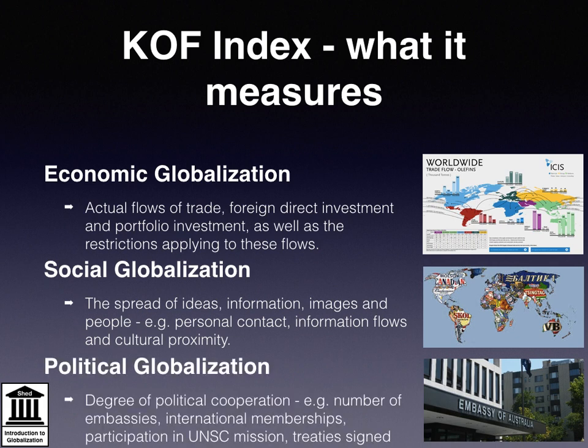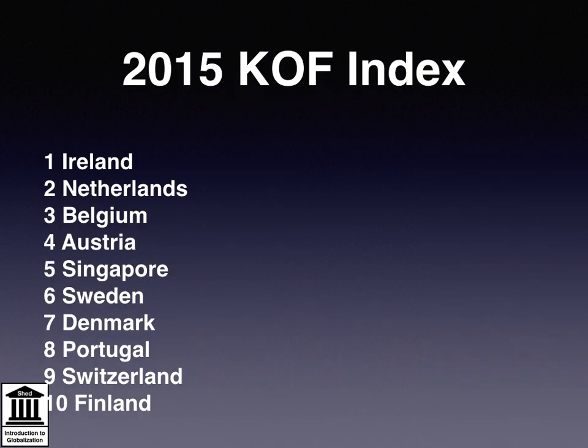Political globalisation is characterised by the degree of political cooperation. It is measured by the number of embassies, membership of international organisations, participation in UN Security Council missions and numbers of international treaties signed. According to the 2015 index, which measures globalisation from 2012, the 10 most globalised countries in the world were all located in Europe, with the exception of the city-state of Singapore. Critics of the index have suggested this indicates regionalisation rather than globalisation.